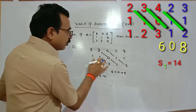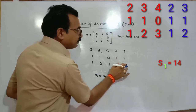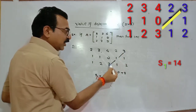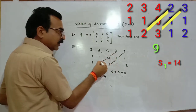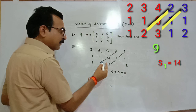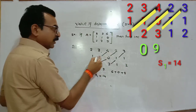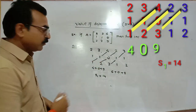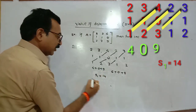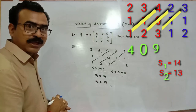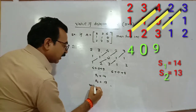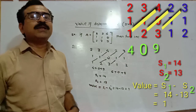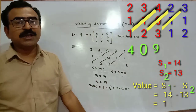Now perform the reverse diagonal multiplications. 3 into 1 is 3, 3 into 3 is 9. Then 2 into 0 is 0, 0 multiplied by 2 is 0. Then 4 into 1 is 4. Adding these: 9 plus 0 is 9, 9 plus 4 is 13. Represent this as S2. The value of the determinant is S1 minus S2, that is 14 minus 13 equals 1. In this way you can also calculate the value of a 3×3 determinant.